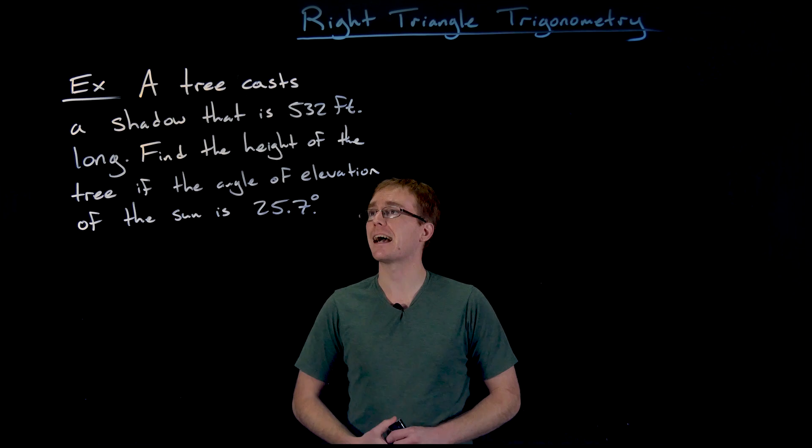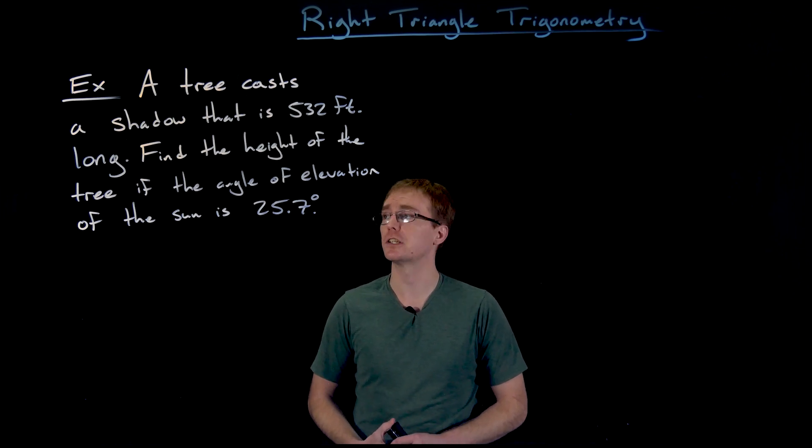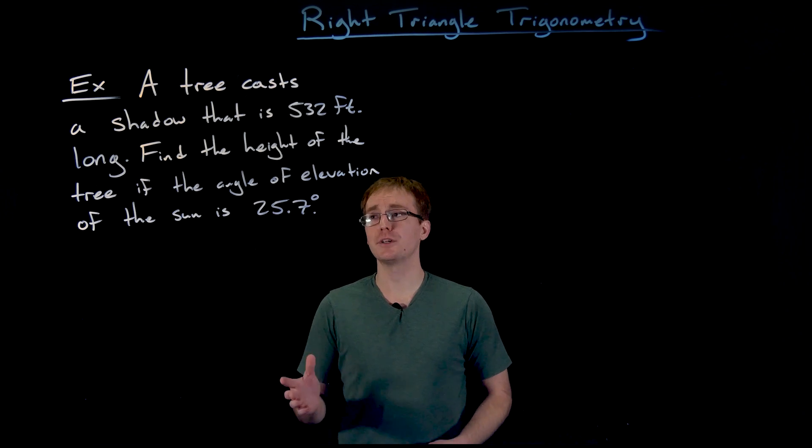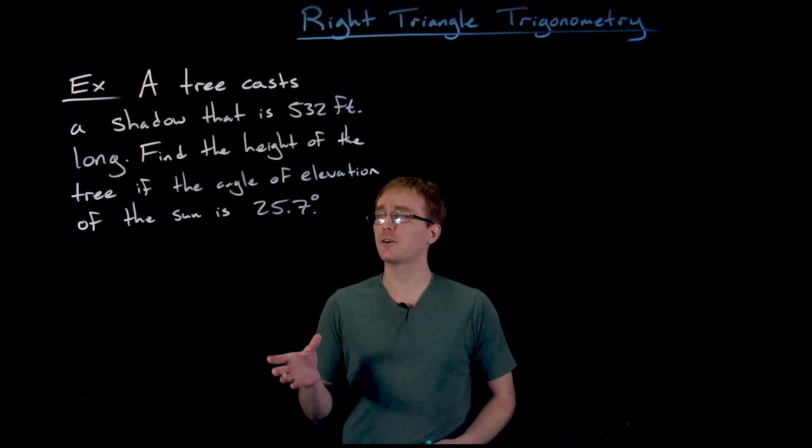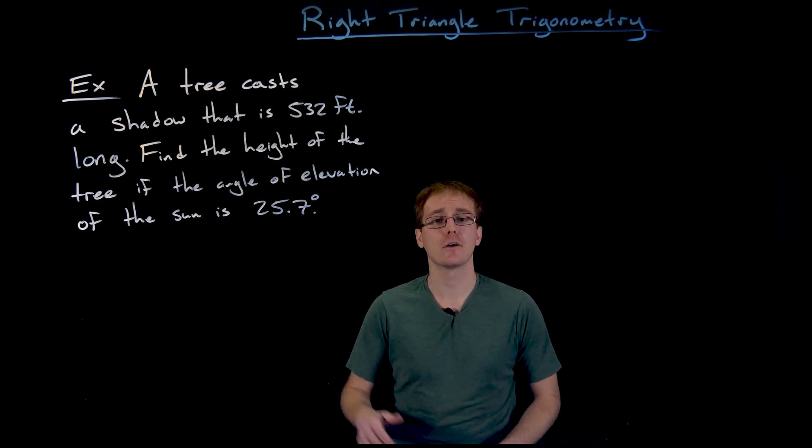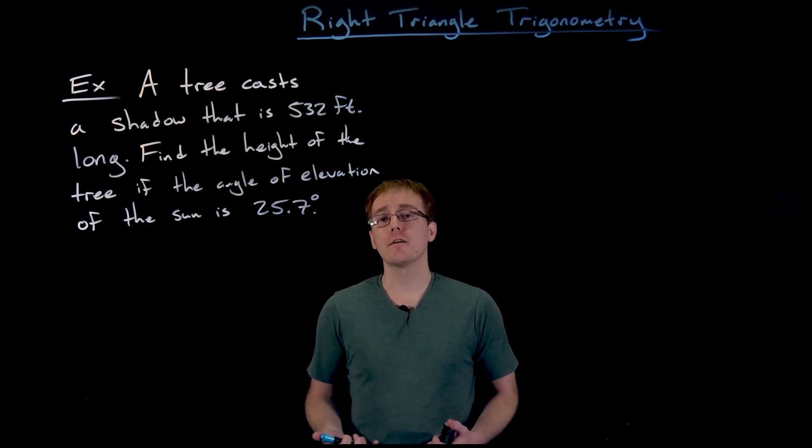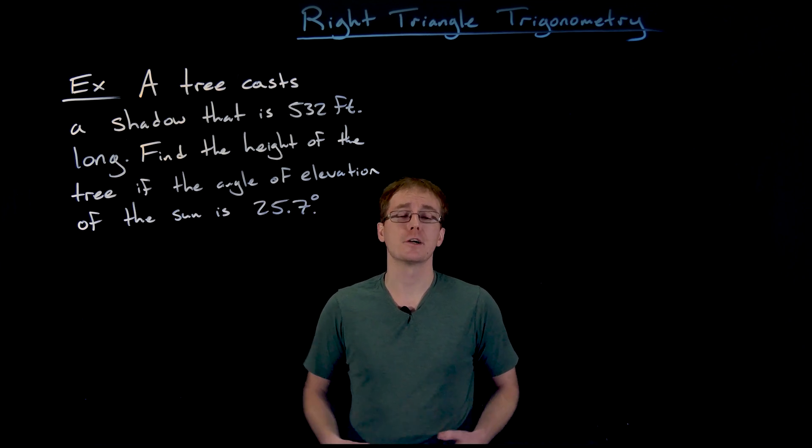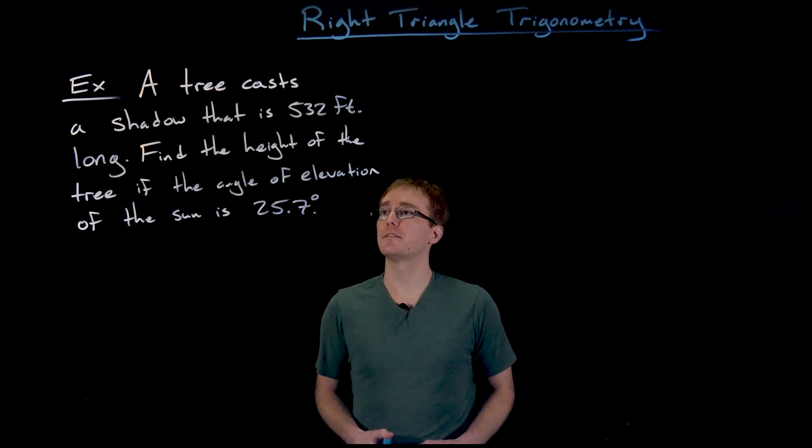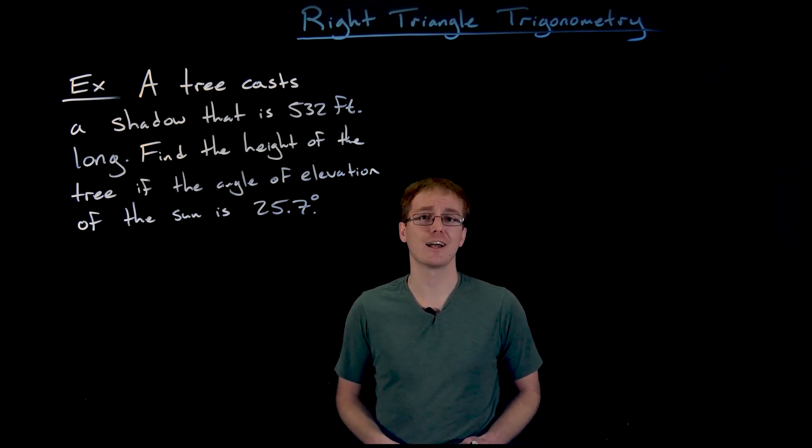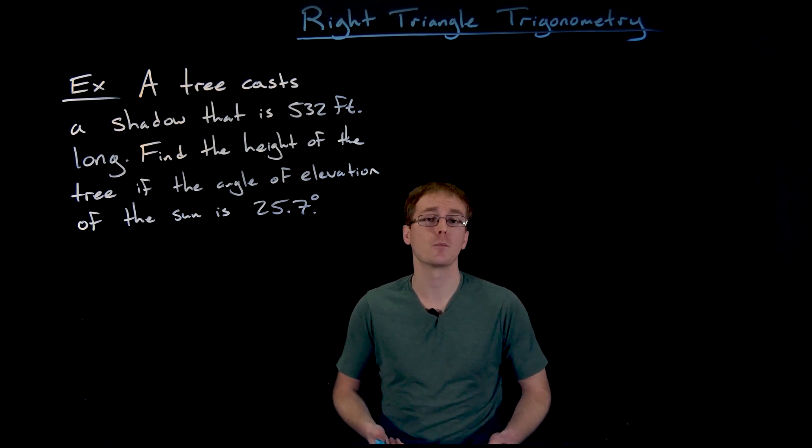All right, so we are told a tree casts a shadow that's 532 feet long, and we want to find the height of the tree if we know or we could measure that the angle of elevation of the sun is about 25.7 degrees. So it may not be immediately obvious to us what we need to do to figure out the height of this tree, but we are given some information and so let's go ahead and try to draw a picture to see if that helps us organize our information and what to do next.